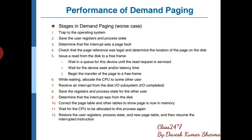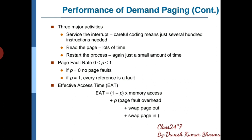जैसे ही वह process का page वहाँ पहुँच गया, अब CPU उसको allocate कर दो। पहले आपने उसको wait करा दिया था — दूसरी process को CPU दे दिया था। जब paging हो रही है तब उस particular CPU का work नहीं हो रहा है, सिर्फ pager का work हो रहा है। अगर CPU खाली पड़ा था तो आपने किसी दूसरे process को दे दिया। जैसे ही वो page memory में आ गया — swap in होके — अब उसकी सब saved state है, उसको वहीं से execute करा दो जैसे context switching में करते थे।